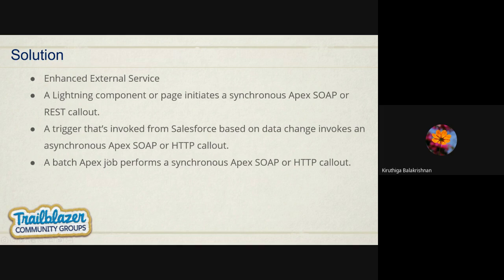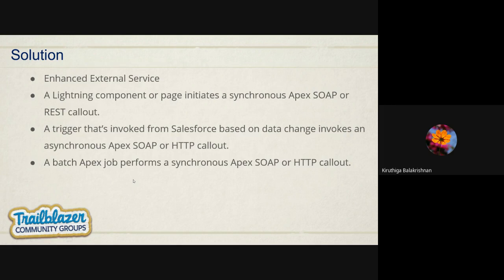Only when the first two approaches don't work should you consider the others. A trigger is an asynchronous way of updating data — Salesforce has tagged it as a suboptimal solution. It may not be the best fit, but you can still use it. Finally, Batch Apex — it uses the same REST/SOAP processing except the execution context is different. It's suboptimal because Batch Apex has its own limitations like governor limits for callouts, but you can still achieve the use case this way.